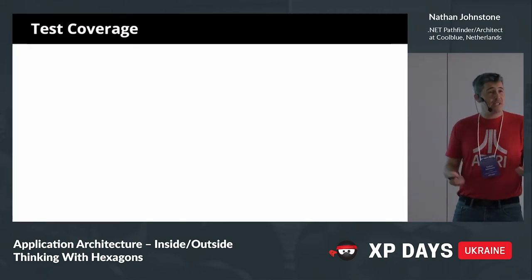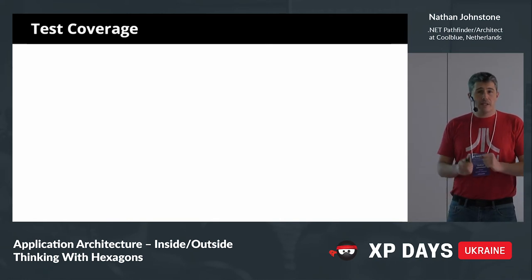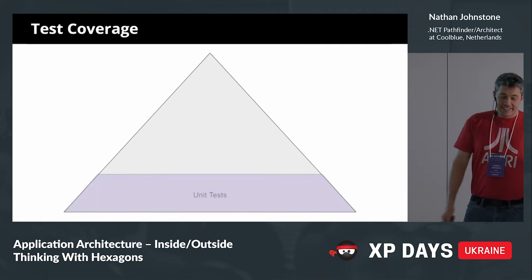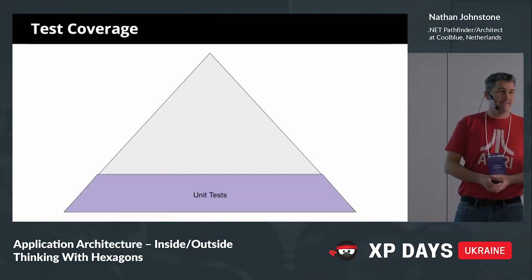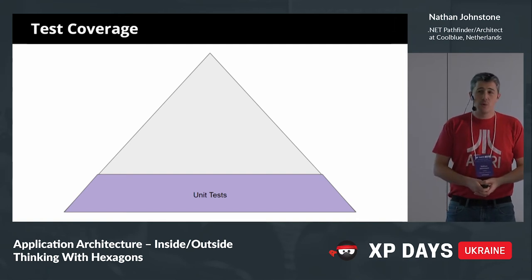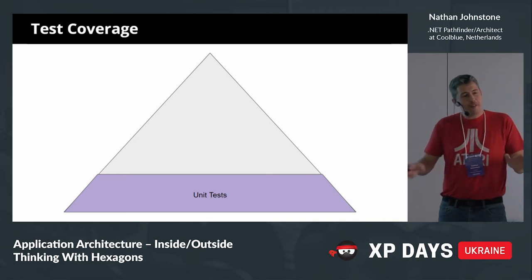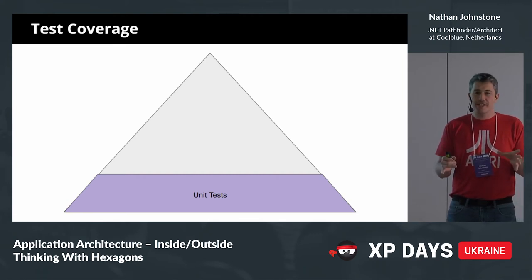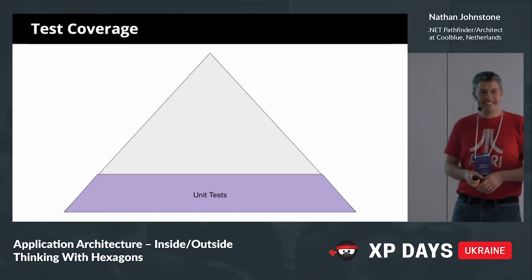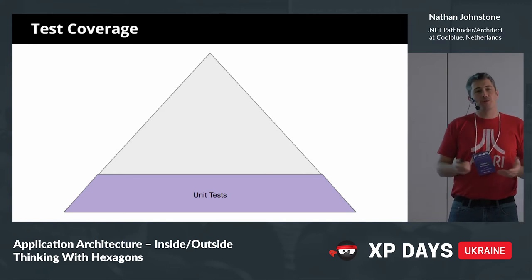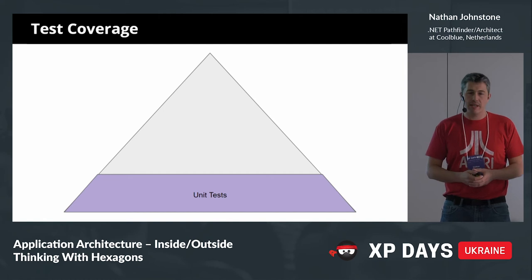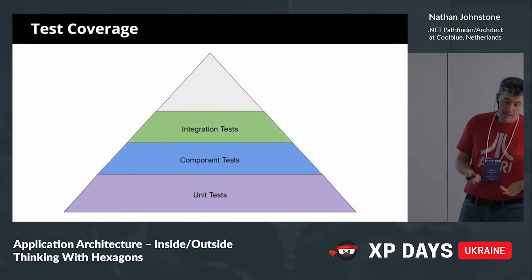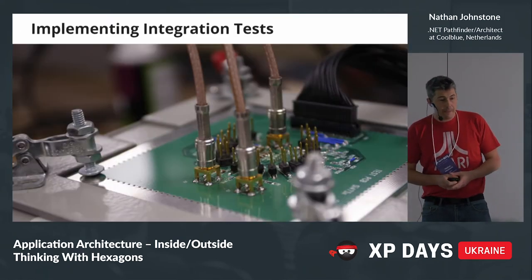Let's go into their test coverage. 90 to 95 percent coverage and it would still fail in production — how can that happen? Looking at what those tests were composed of: they had unit tests, and that was it. Just unit tests, 95 percent unit test coverage. Is there anyone here that thinks you can build any kind of relatively complex application with just unit tests? No. Your hard problems — race conditions and that sort of stuff — are always going to be in between the boundaries of your classes.